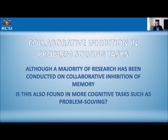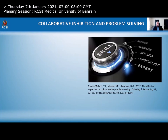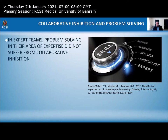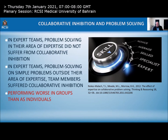Research on collaborative inhibition in problem solving shows that expert teams solving problems in their area of expertise did not suffer from collaborative inhibition. However, when those same expert teams solved simple problems outside their expertise, they suffered collaborative inhibition — performing worse in groups than as individuals. This has been found in several other studies with non-expert groups as well.